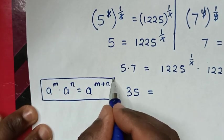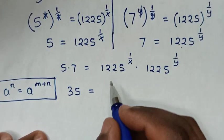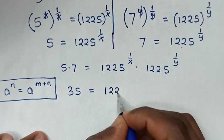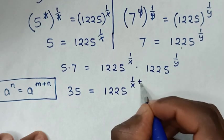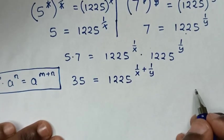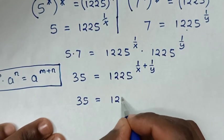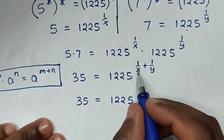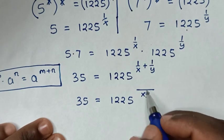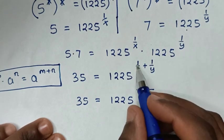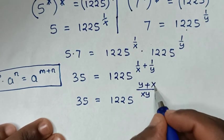For our equation, it will be the same base with addition of powers. It will be same base of 1225, and we add these powers: 1 over x plus 1 over y. So it will be 35 is equal to 1225 power of 1 over x plus 1 over y. The common denominator of x and y is xy. So xy divided by x is y, and xy divided by y is x. The power becomes x plus y over xy.